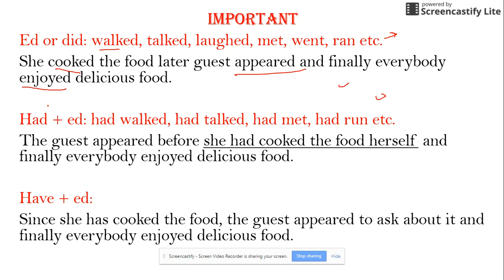The second important tense is past perfect — 'had ed': had walked, had talked, had met, had run. Unlike past simple where actions are in sequence, 'had ed' is used when there are two actions at different times — the older action takes 'had ed.' For example: 'The guest appeared before she had cooked.' Here, cooking was the first (older) action, so it takes 'had cooked.' The difference: if actions are in sequence use 'ed'; if one action is older than another, use 'had ed' for the older one.